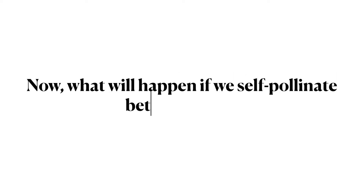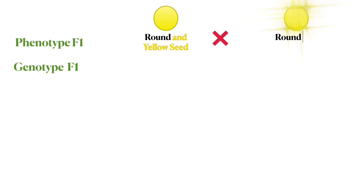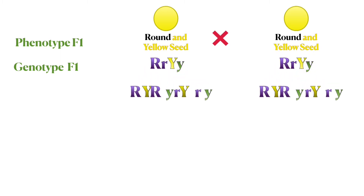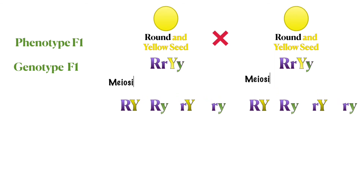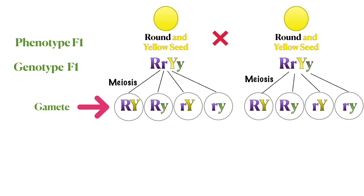Now we are going to see what will happen if we self-pollinate between the first filial. A cross between dihybrids is known as a dihybrid cross. During the formation of the gametes, there are four possible gametes produced: gametes containing both dominant alleles RY, gametes containing at least one dominant and one recessive allele, or gametes containing both recessive alleles ry.